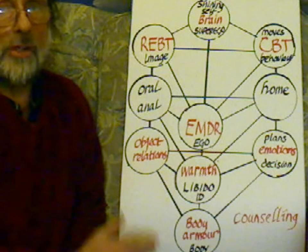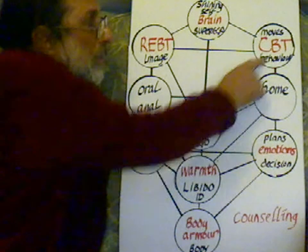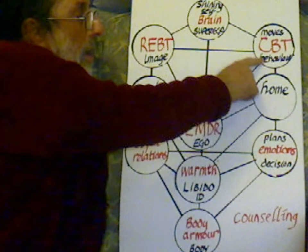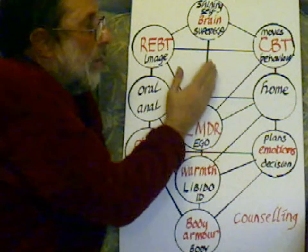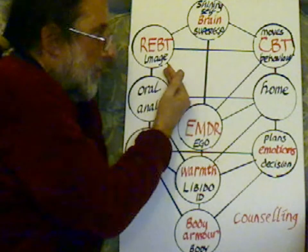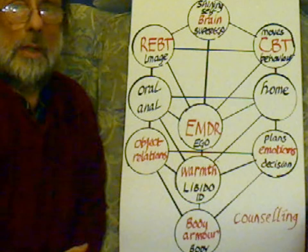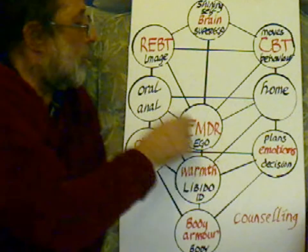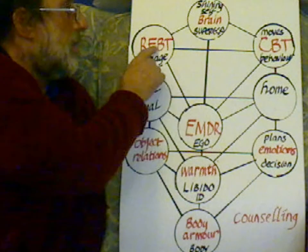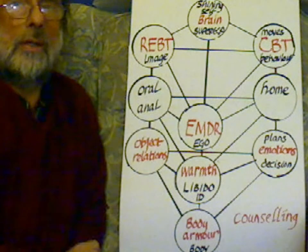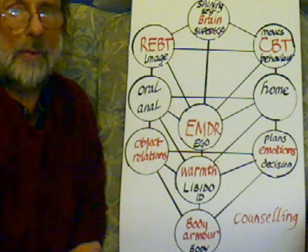We are attracted to cartoons and we mimic cartoons, which relates to this path. The EMDR — the eye movement — involves moving the eye to the right and to the left. To the right is watching behaviour, watching cartoons. To the left is recognising faces and the relationship, which corresponds to REBT and the relationship between the counsellor and the client.